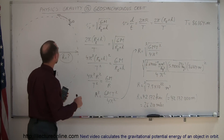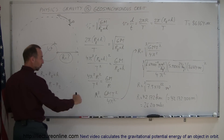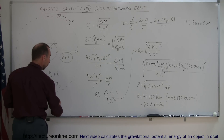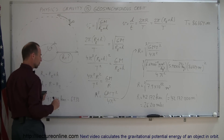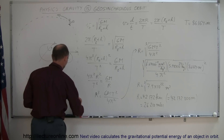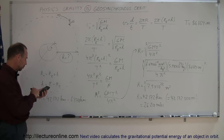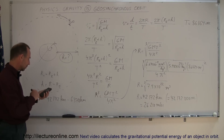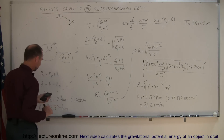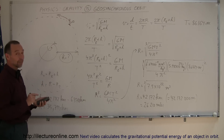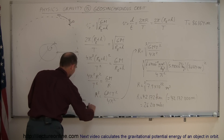That total distance is not yet h. To find h, we take the total distance of 42,172 km and subtract the radius of the earth, which is 6,378 km. So 42,172 minus 6,378 gives h equal to 35,794 kilometers above the surface of the earth. Converting to miles by dividing by 1.609, that is approximately 22,246 miles above the surface.